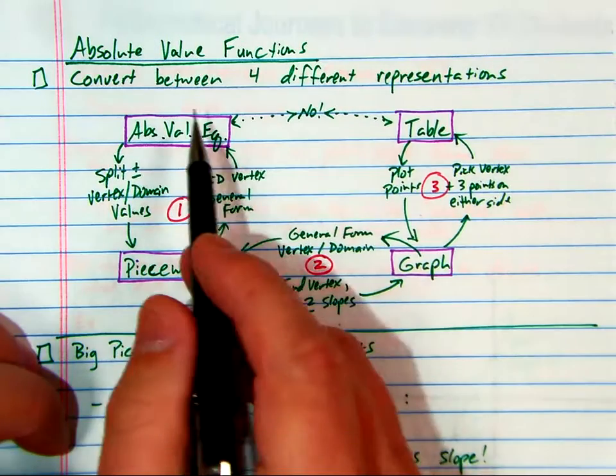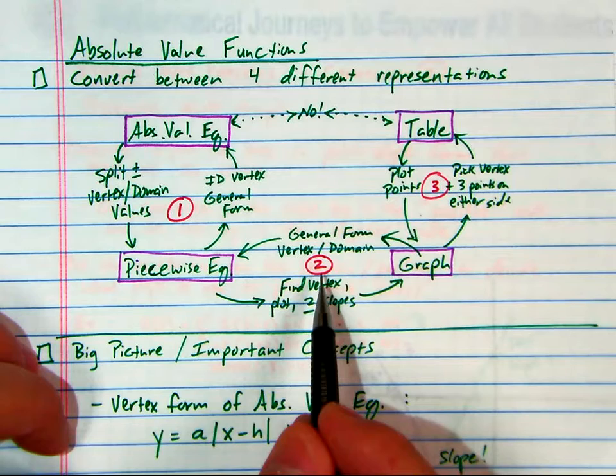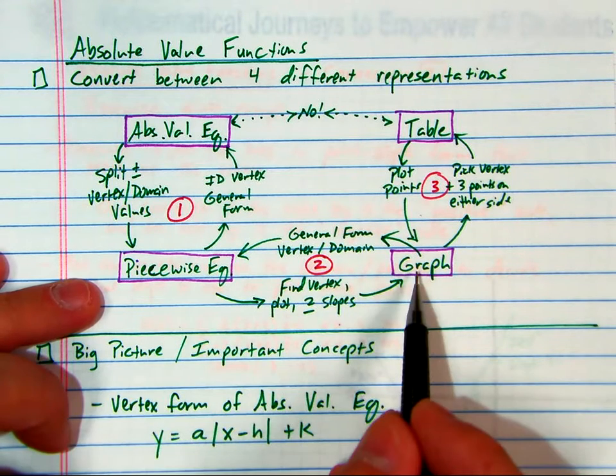Here's the absolute value functions, the connection between the four different representations. This is connection two, between the piecewise equation and the graph.